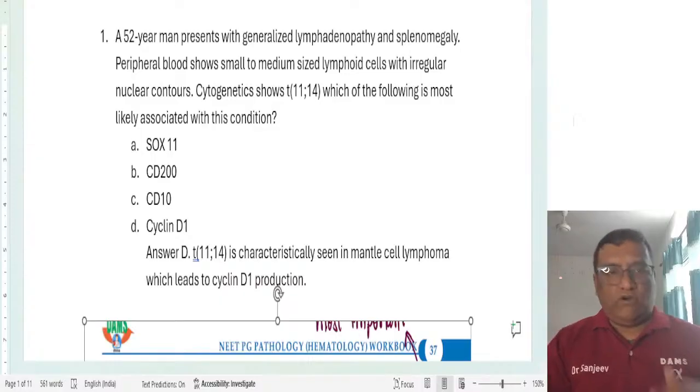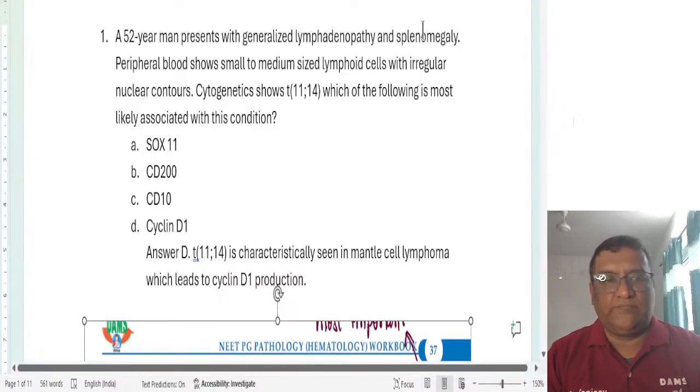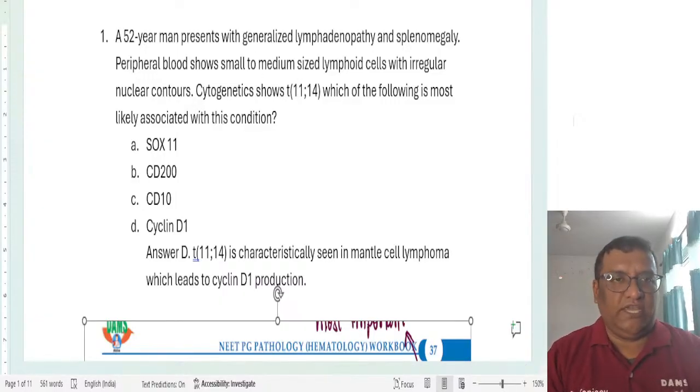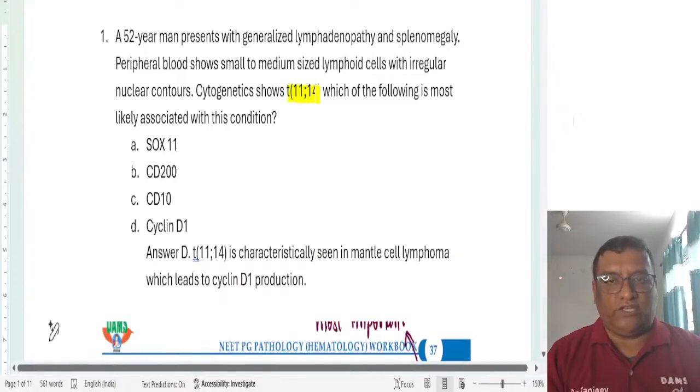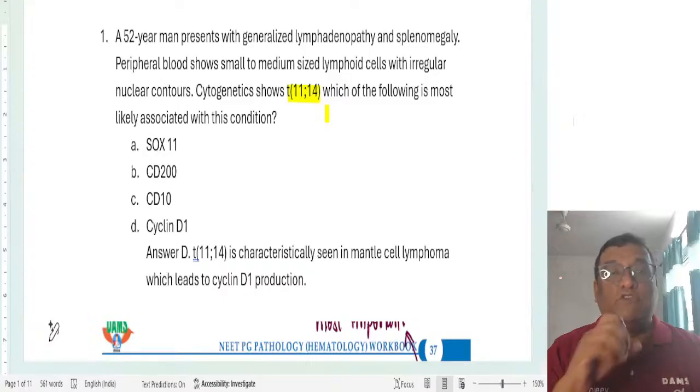Let's look at question 1. A 52 year old man presents with generalized lymphadenopathy and splenomegaly. Peripheral blood smear shows small to medium lymphoid cells with irregular nuclear contours and cytogenetics shows translocation 11;14. This was a keyword given to us, cytogenetics is showing translocation 11;14 which can be seen in mantle cell lymphoma. Which of the following is most likely associated with this condition?